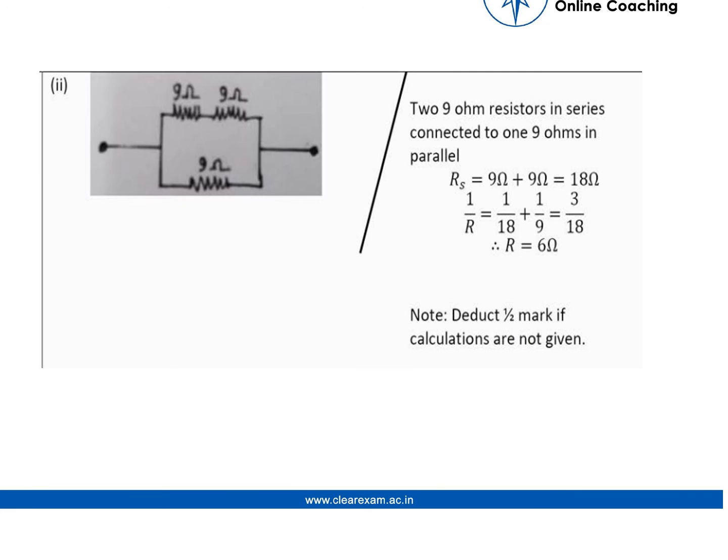The second part was to get six ohm. So the solution says two nine ohm in series and one in parallel. In first part it was two parallel one series, now it's two series and one parallel. So by applying the formulas, we get the solution with six ohm.